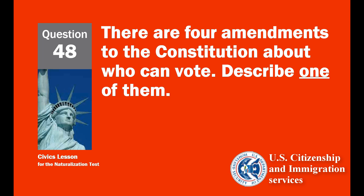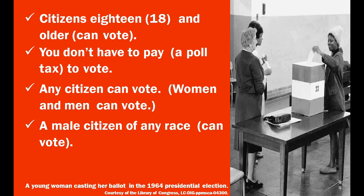There are four amendments to the Constitution about who can vote. Describe one of them. Citizens 18 and older can vote. You don't have to pay a poll tax to vote. Any citizen can vote. Women and men can vote. A male citizen of any race can vote.